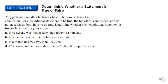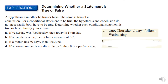For the conditional statement to be true, the hypothesis and conclusion do not necessarily both have to be true. For example: if yesterday was Wednesday, then today is Thursday — that's true, because Thursday always follows Wednesday. If an angle is acute, then it has a measure of 30 degrees — that's false, because the angle could be 32 or 76. 30 degrees is only one example of an acute angle.